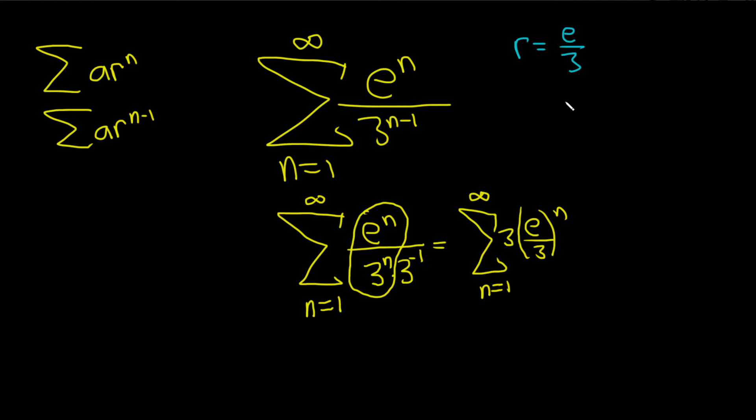So we can now use something called the geometric series test, I'll abbreviate it GST. If the absolute value of r is less than 1, then the geometric series test says that our infinite series converges.